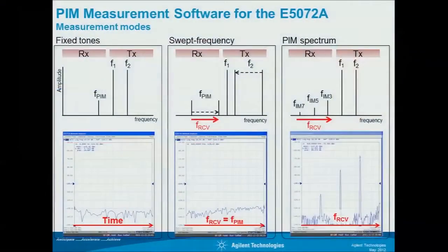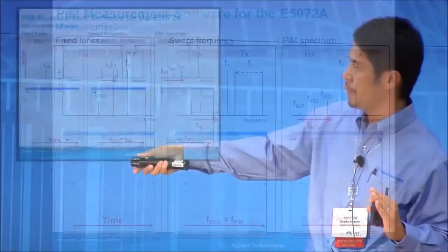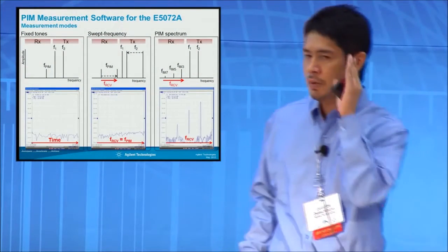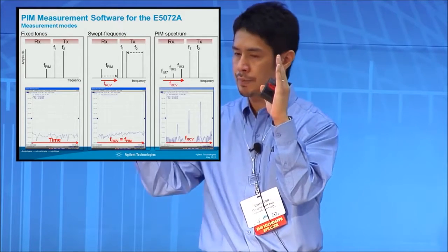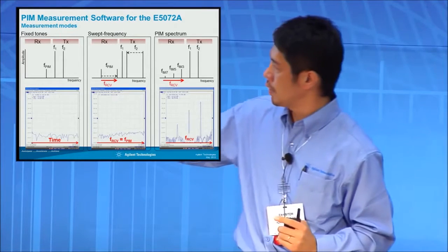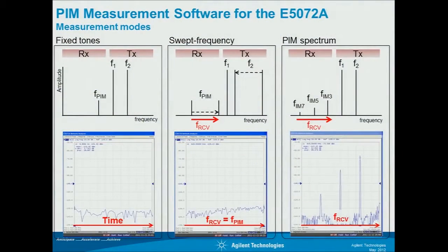The software supports three measurement modes. One is fixed tones — you have two fixed frequencies and one fixed measurement frequency for PIM, so you can measure PIM over time. The second is swept frequency mode — one fixed frequency and one swept frequency — and the PIM will track accordingly. You can lock the receiver frequency to the PIM so you can have PIM measurement over frequency.